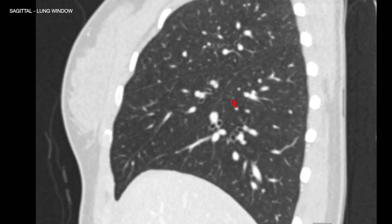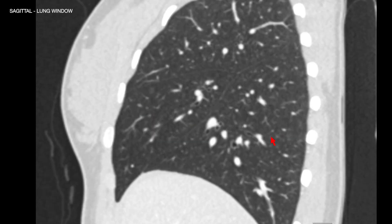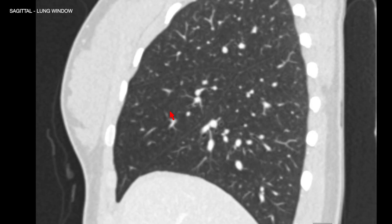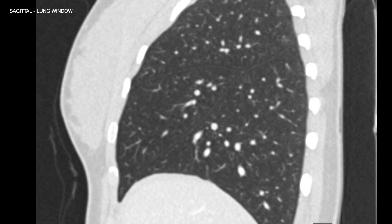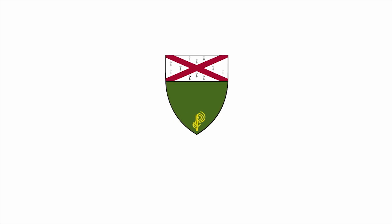The right lung has three lobes: right upper lobe, right middle lobe, and right lower lobe. The right lower lobe is divided from the other two by the major fissure, and the upper and middle lobes are divided by the right minor fissure. We can see the costophrenic angles are sharp and clear — that's where fluid accumulates in cases of pleural effusion.